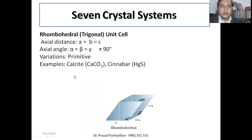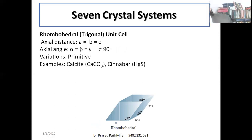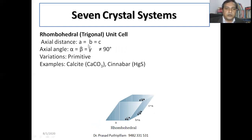Rhombohedral, also known as trigonal, unit cells: all axial distances are equal — a = b = c — and the axial angles are all equal — α = β = γ — but not 90°; they share the same angle value. There is only one variation: primitive. Examples include calcite (calcium carbonate) and cinnabar (mercury sulfide, HgS).